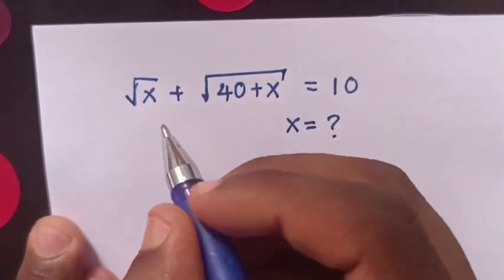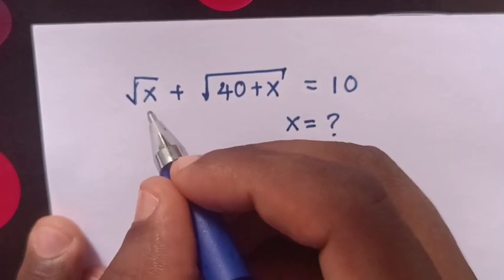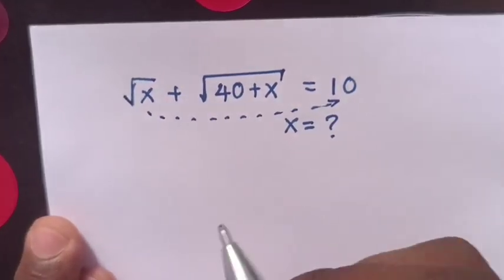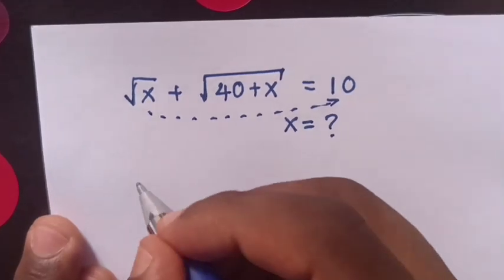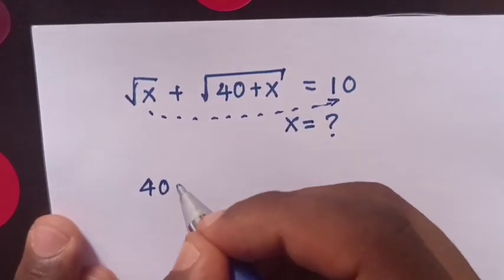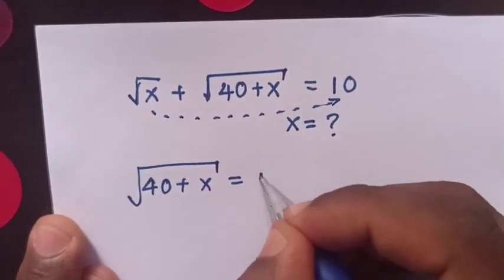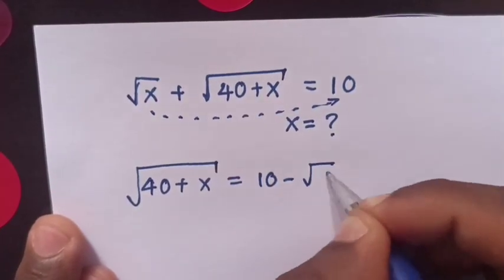First step, we take square root of x to the right side. So our equation will be square root of 40 plus x equals 10 minus square root of x.